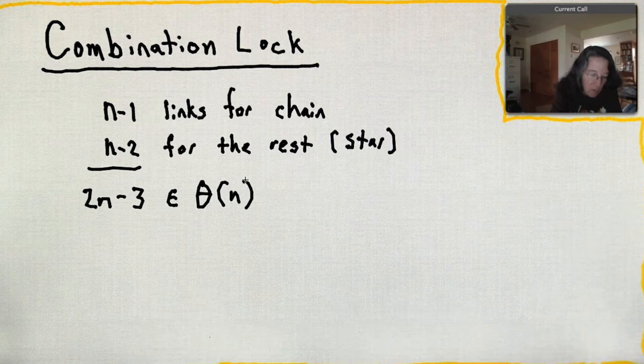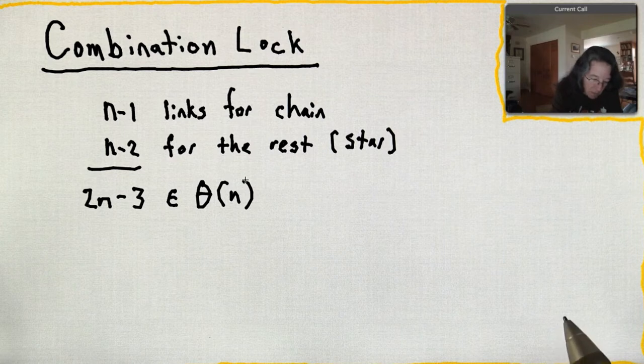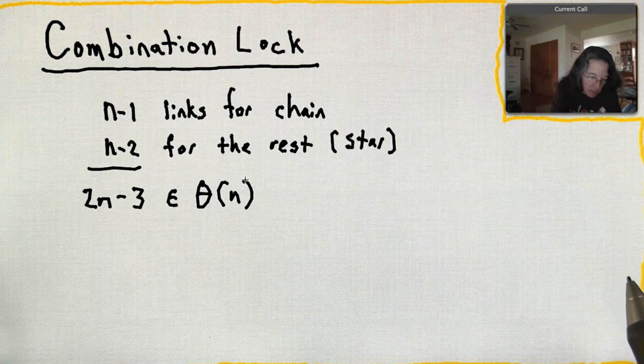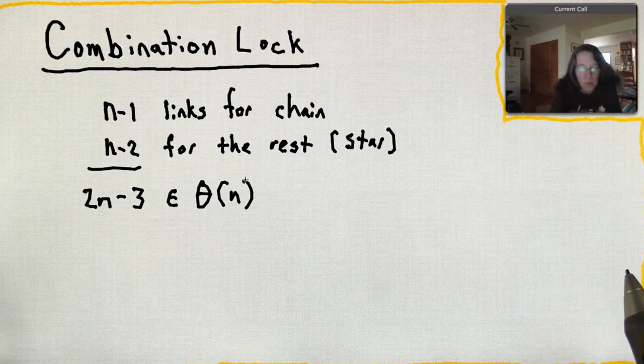The jump from the first node to the second node is a little different because you only add one edge. But when you think of big theta and big O notation, you're dealing with bigger numbers, like how it grows as it gets very large.